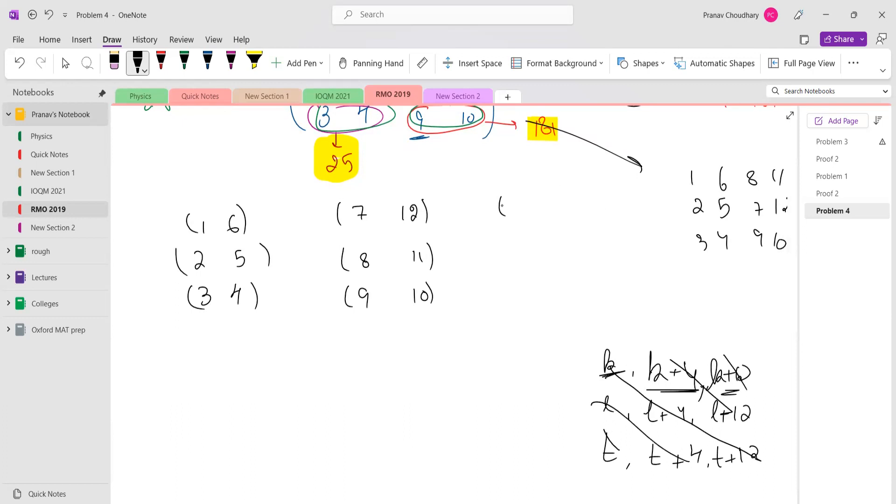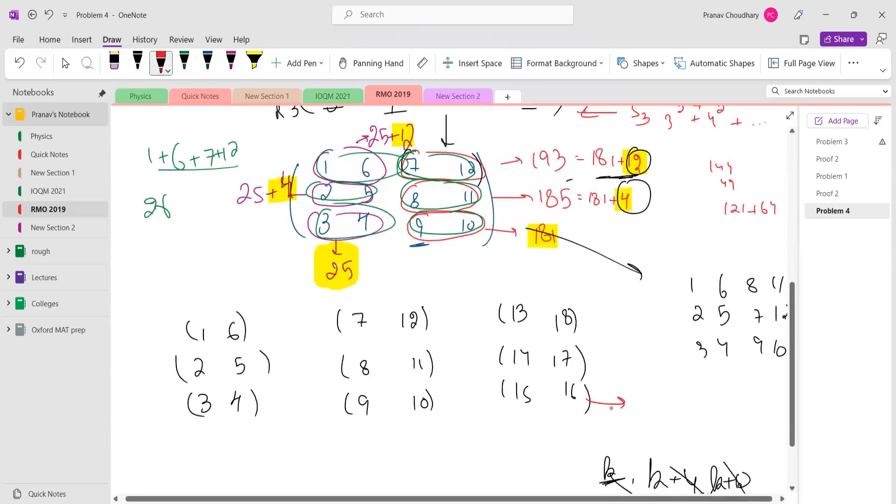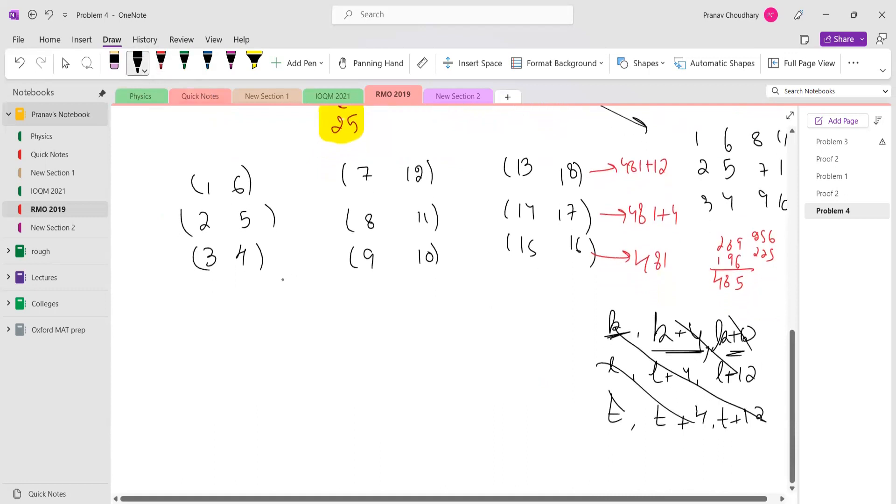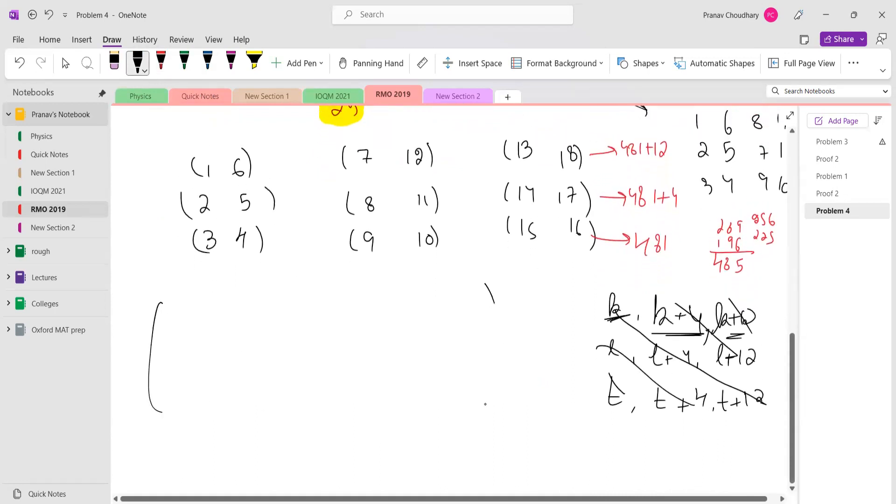Then we move: 13, 14, 15, 16, 17, and 18. Now this thing is 256 plus 225 = 481. This thing is 289 plus 196 = 485, which is 481 plus 4. And I'm pretty sure this will come out to be 481 plus 12.